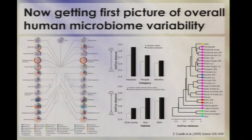We can use this to put an explicit scale on the distances between microbial community samples — a bigger bar means greater distance. Two samples from the same body habitat are less different than two from different habitats. Within a habitat, two from the same person are less different than two from different people. Within a person and habitat, two samples a day apart are less different than two three months apart. The mouth was the most stable habitat we looked at, skin the least stable, and the gut in between.